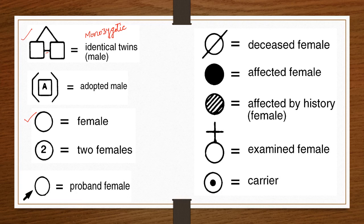In males, carriers are absent — carriers are always female. The carrier female is represented by a circle with a dot inside. An examined female is a circle with a small mark on top. Affected history is shown with lines on the circle, and a shaded circle represents an affected female. A circle with a cross indicates a deceased female.